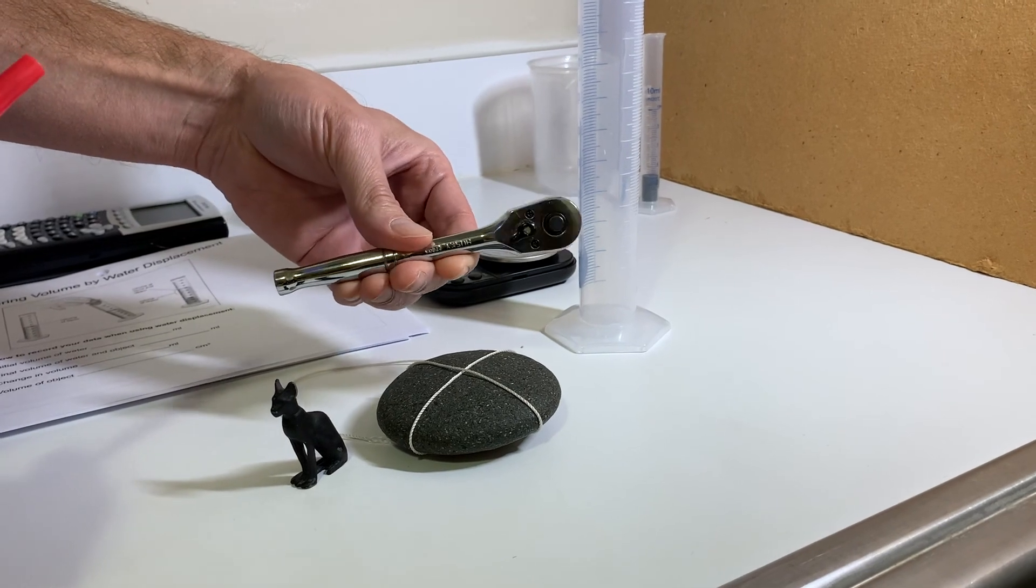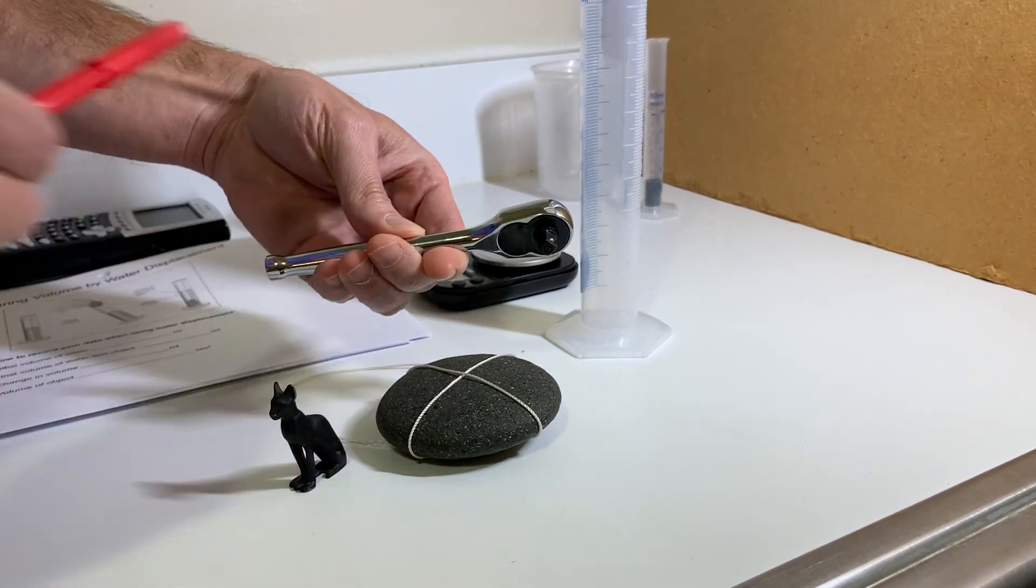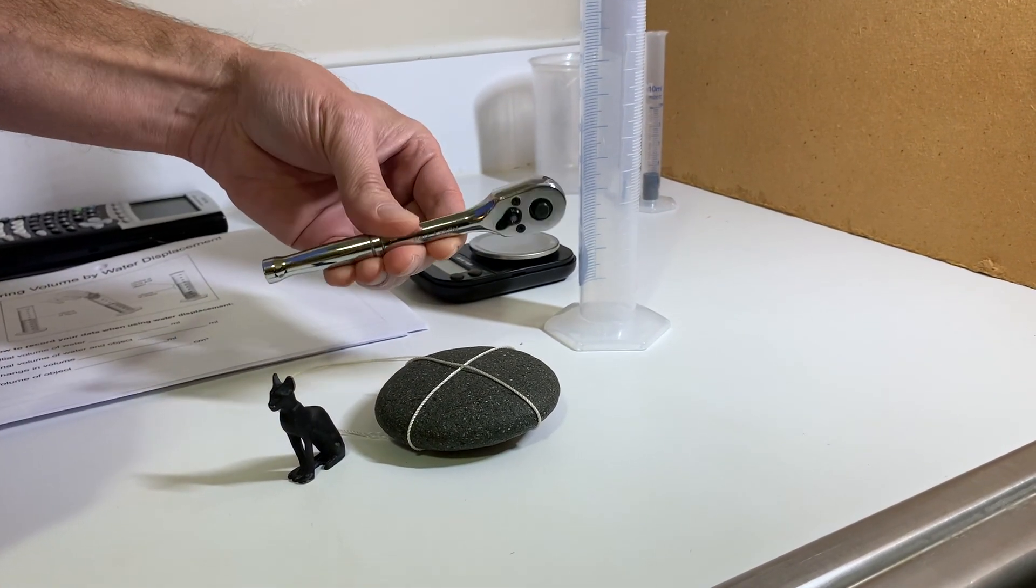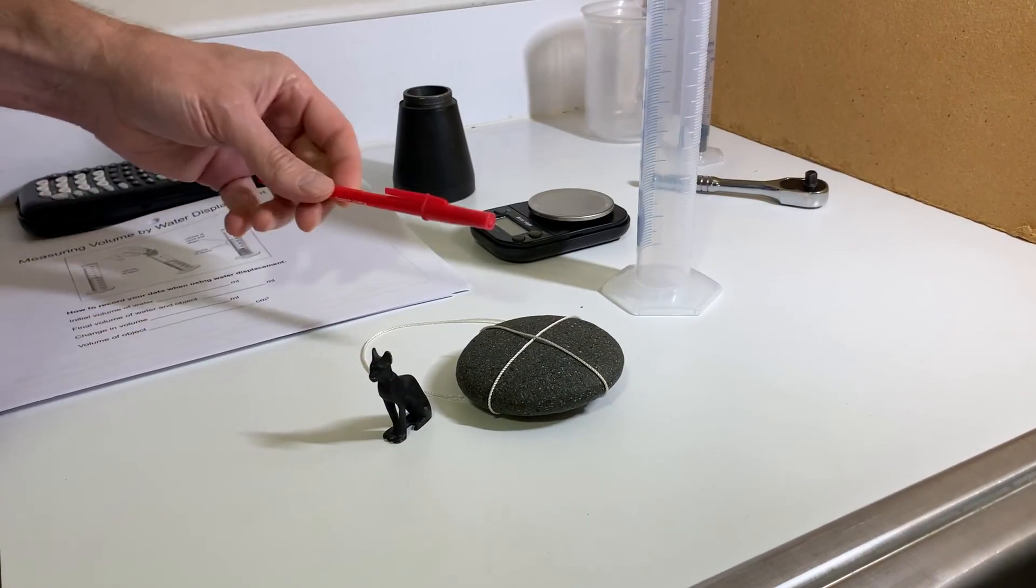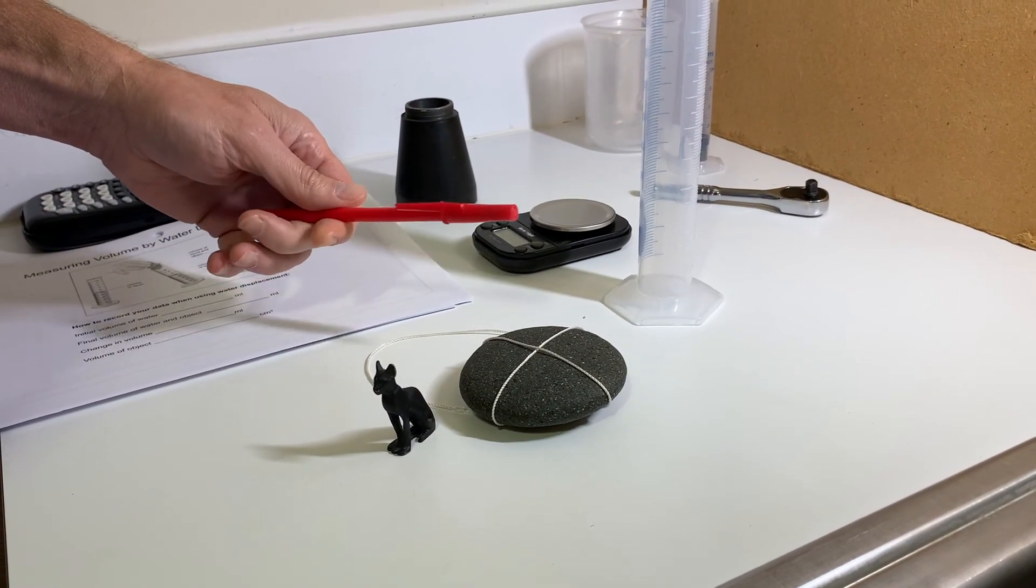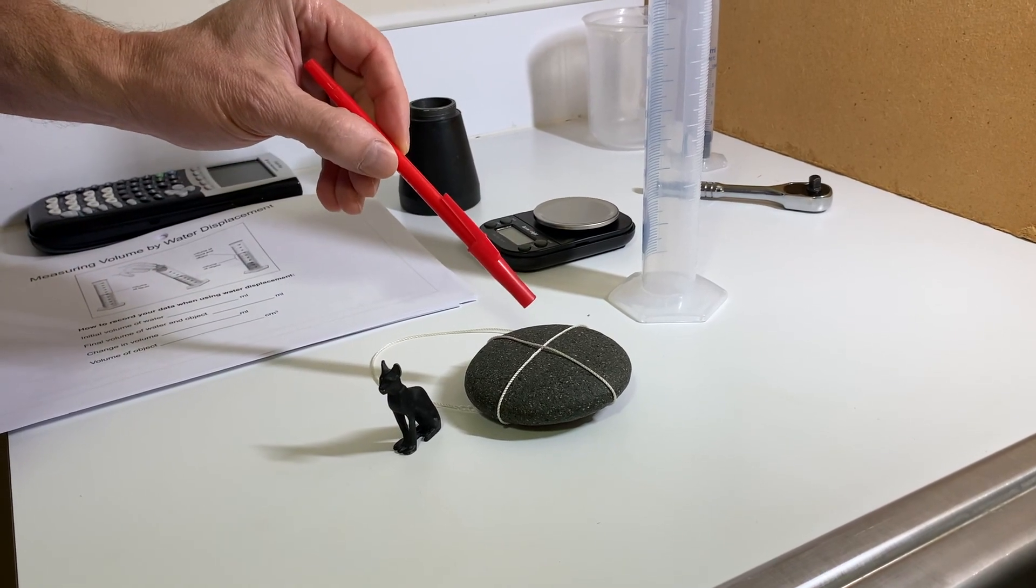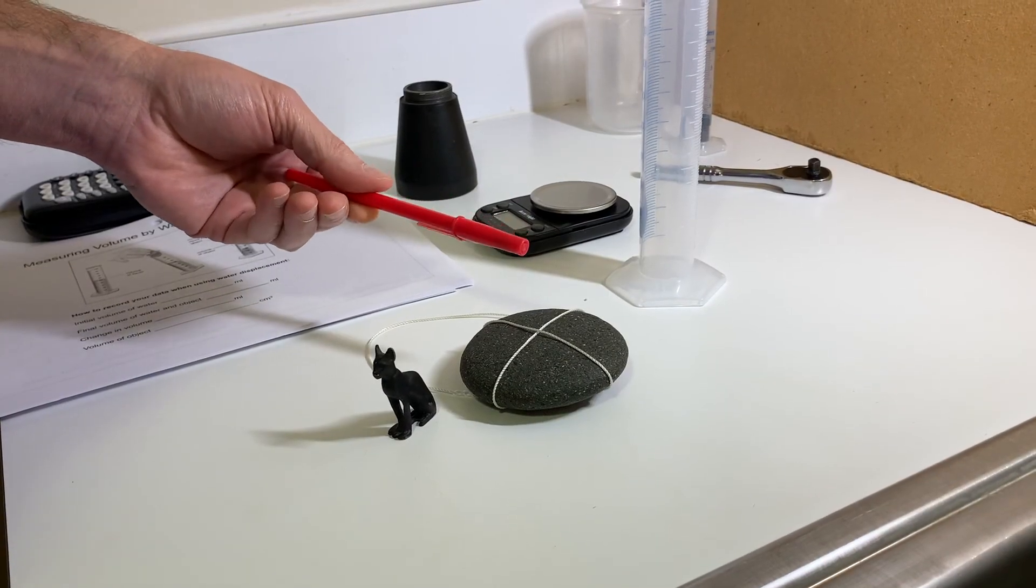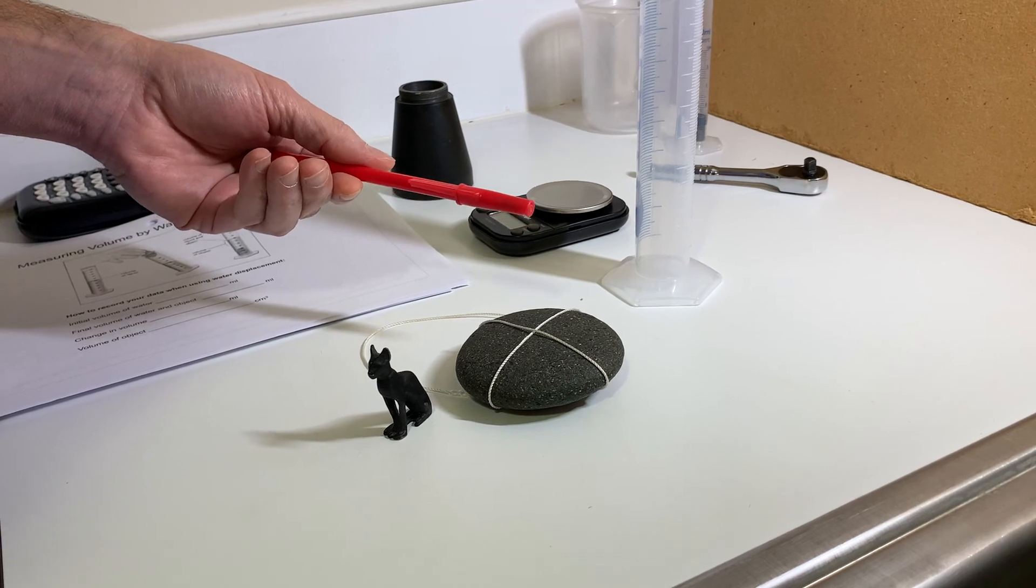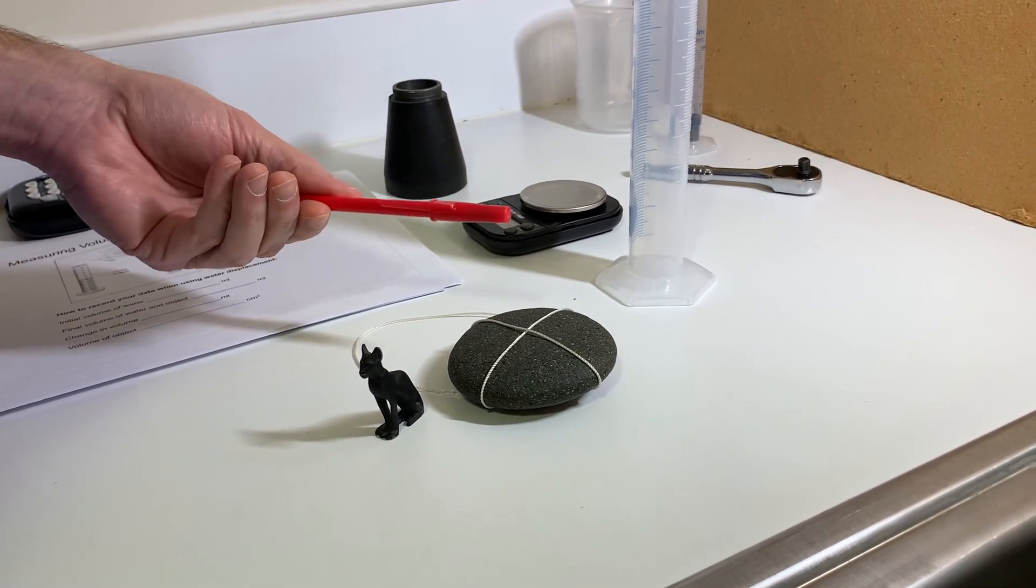I'm going to use this, a steel socket wrench. It has a little bit of plastic, but hopefully that won't affect the density too much. I also chose these objects because I've wanted to identify the material. Like I said, I've always suspected this was made of basalt. Density is a great way to identify a material because it's a property of that material.